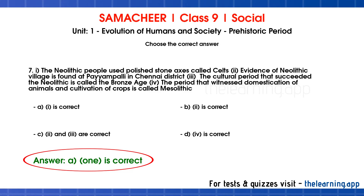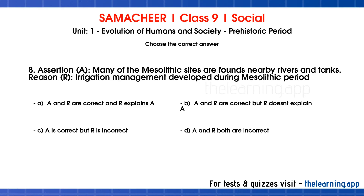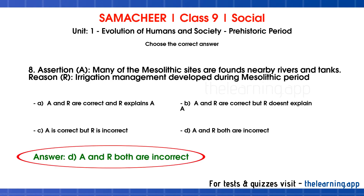Eighth question — Assertion: many of the Mesolithic sites are found nearby rivers and tanks. Reason: irrigation management developed during the Mesolithic period. The correct answer is Option D — both A and R are incorrect. Irrigation management and agriculture developed in the Neolithic period, not the Mesolithic period, so the reason is wrong.